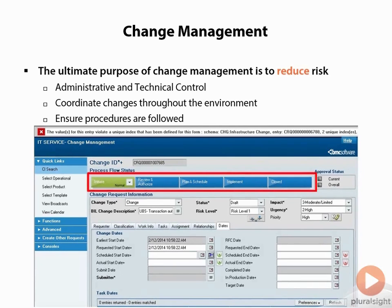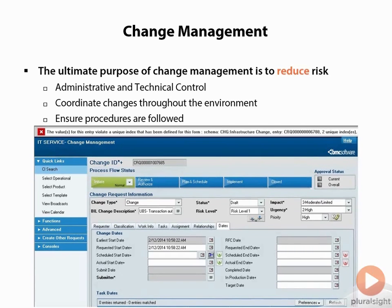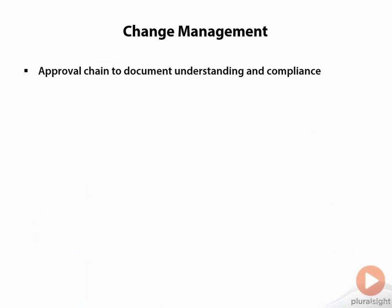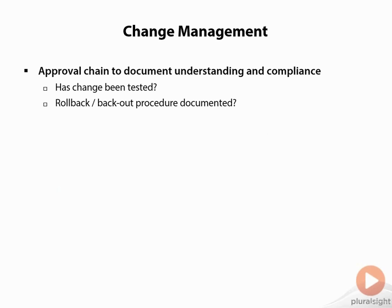Once all of these things are entered, a workflow kicks off an email or notification requiring authorization — peer review, whatever is appropriate for your organization. It gets approval, then gets scheduled, implemented, and ultimately closed. The change management process should have an approval chain to document that what's happening is understood and is in compliance with corporate policies and procedures. The change should be tested and a rollback or back-out procedure documented, incorporated into the ticket either as a link to an external document or directly within the change request.